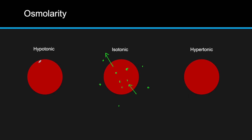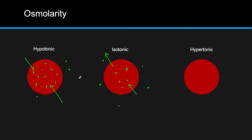In a hypotonic solution — which has a relatively low osmolarity with a low concentration outside the cell — say we have a very high concentration inside the cell. By random movement, because the interior particles prevent water from moving outside more than the exterior particles do, water is going to move inside the cell. This makes sense because the water is trying to equalize concentration, making the inside less concentrated to match the outside.